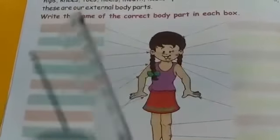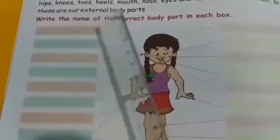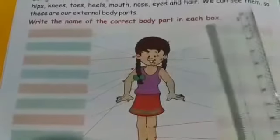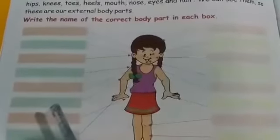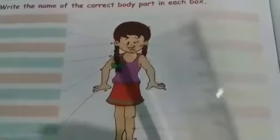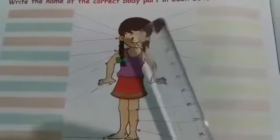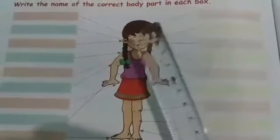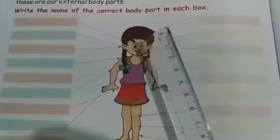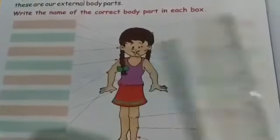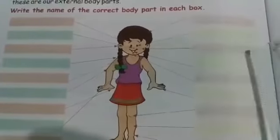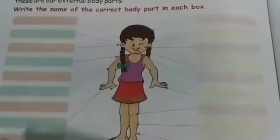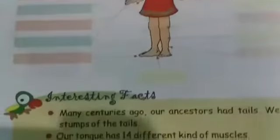So here you have to write. Write the name of the correct body parts in each box. Students, you have to write the body part names here. Like, what is this? This is a pair — this is eyes, you have to write 'eyes' here. Nose, mouth. Just like that, you have to fill these boxes.